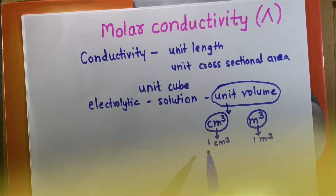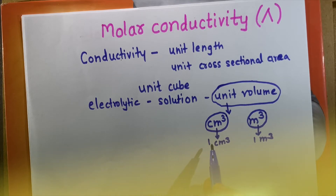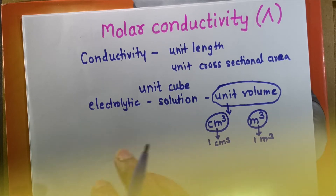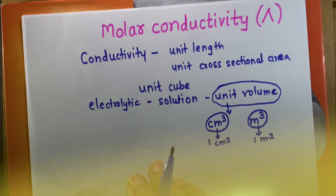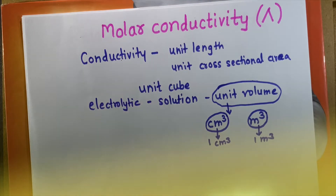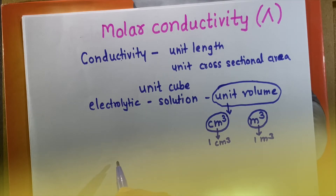Suppose we have two solutions with different concentrations. The number of ions present in 1 cm³ of each solution will be different, and so their conductivities will be different. To compare the conductivity of two solutions, their concentrations must be the same. Therefore, the scientist Kohlrausch introduced the term molar conductivity.